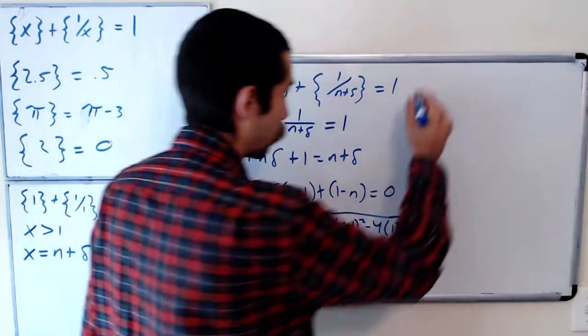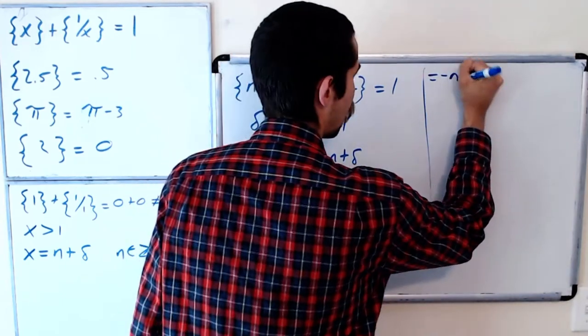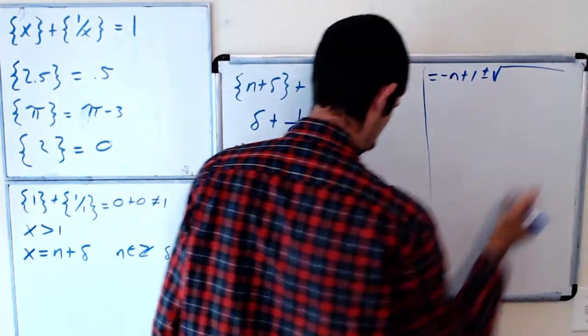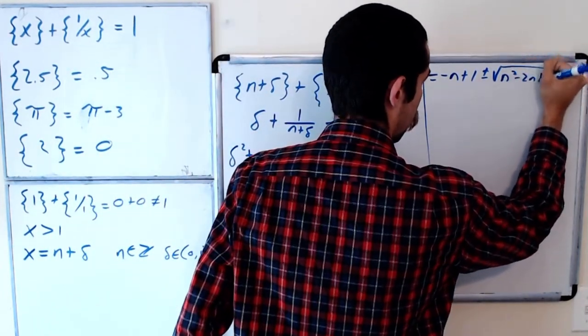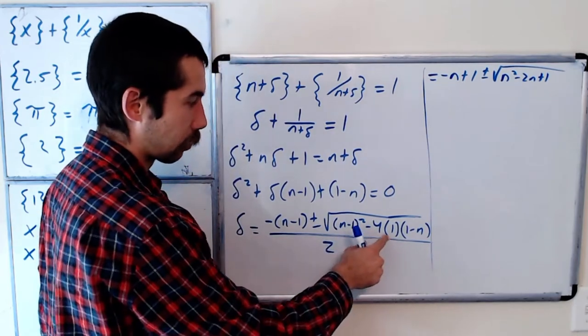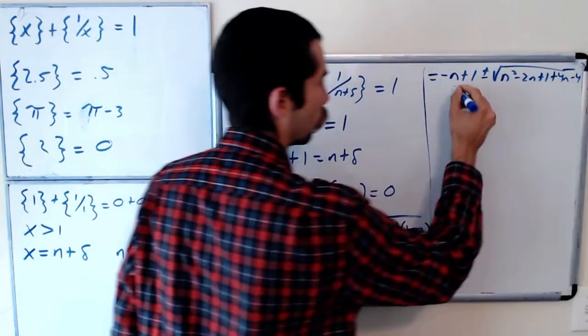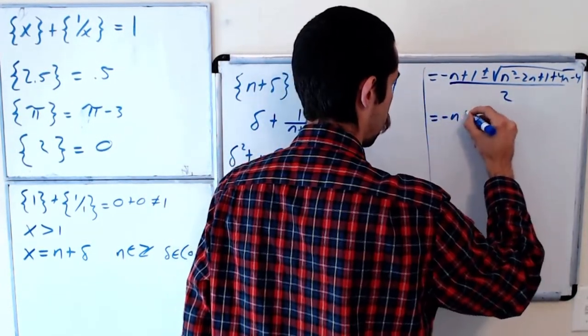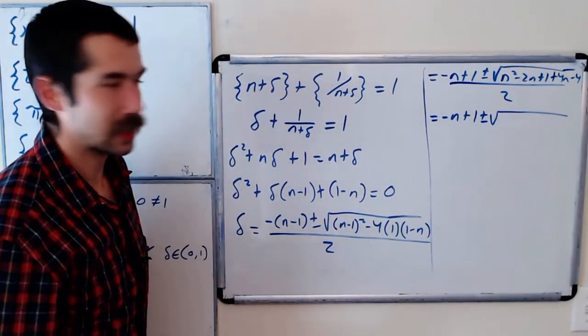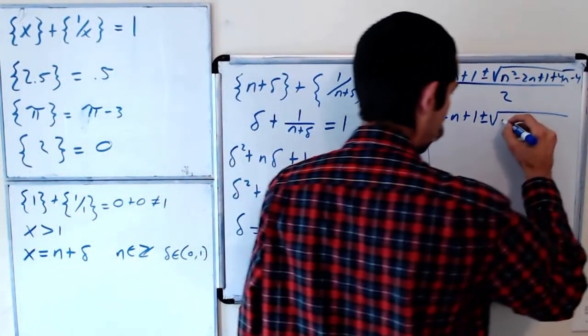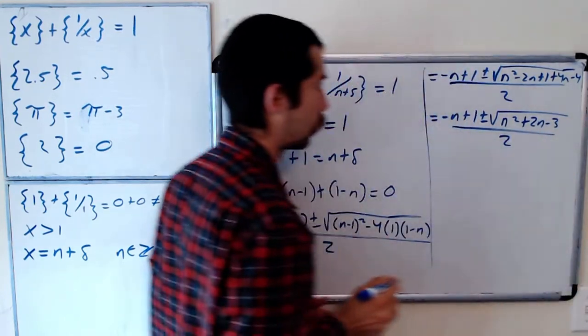All right and let's clean this up a bit. So this is negative n plus 1 plus or minus the square root of n squared minus 2n plus 1 minus 4 plus 4n. That's n squared plus 2n minus 3 all over 2.